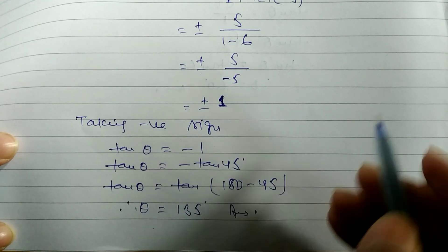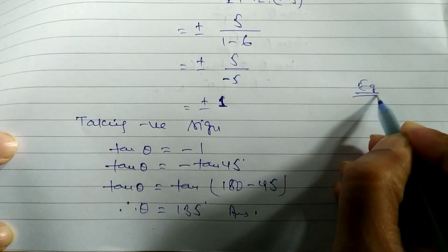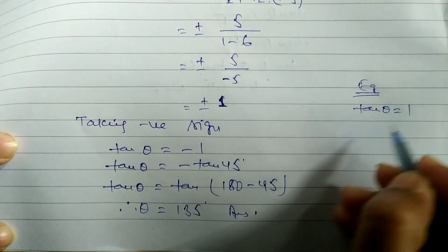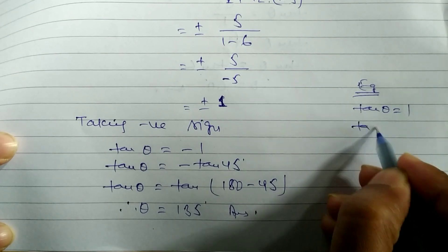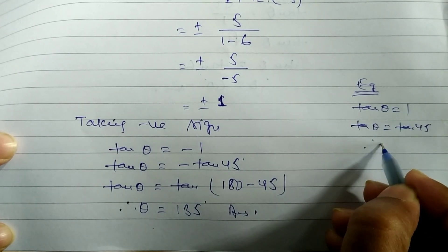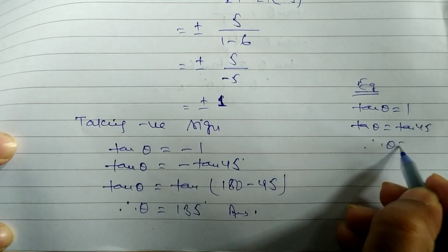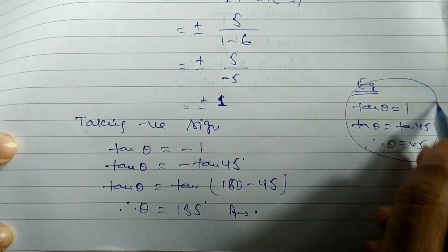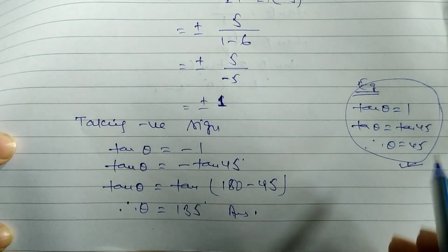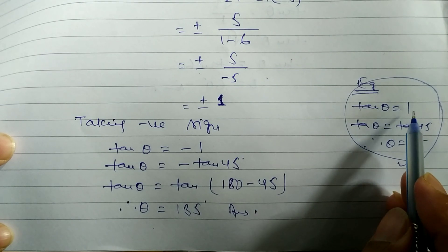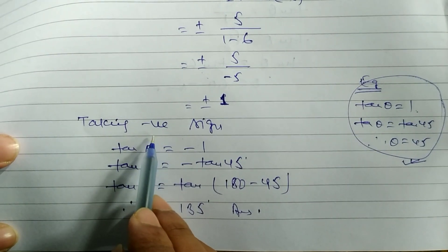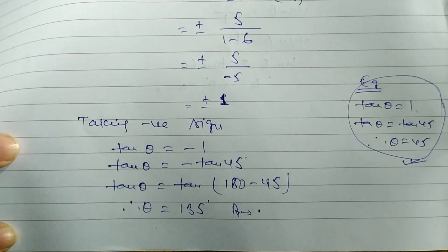For comparison, if we needed the acute angle, we would take the positive sign: tan theta equals positive 1, so tan theta equals tan 45, and therefore theta equals 45 degrees. To summarize: to find the acute angle, take the positive value; to find the obtuse angle, take the negative value.